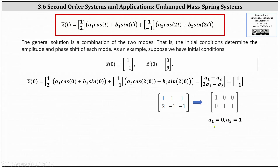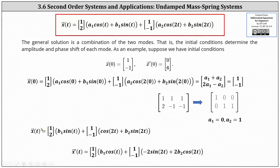Substituting A one equals zero and A two equals one into the general solution, the A one cosine T term drops out, giving us a simplified x of T. Before using the next initial condition, we need to find x prime of T, which is computed from the simplified x of T.